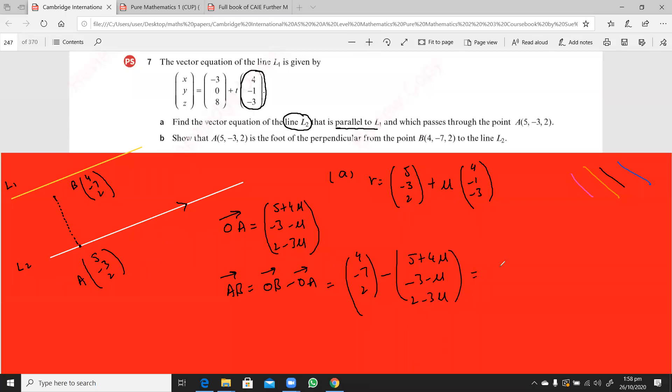So this is 4 minus 5 is minus 1 minus 4 mu, minus 7 plus 3 is minus 4 plus mu, and 2 minus 2 is 0, and this is just 3 mu. So that is my AB.